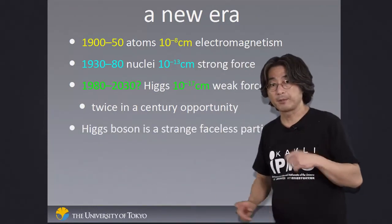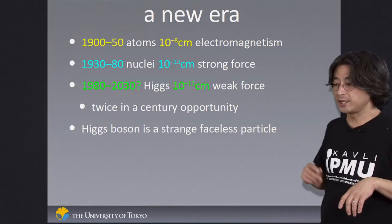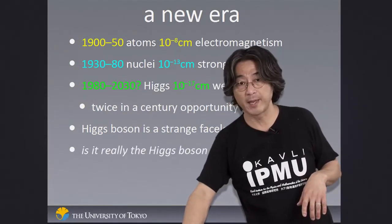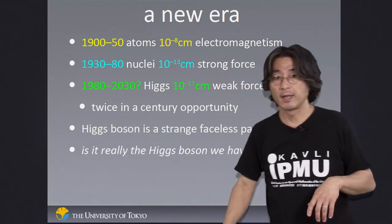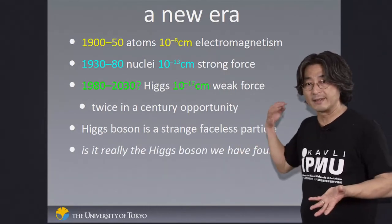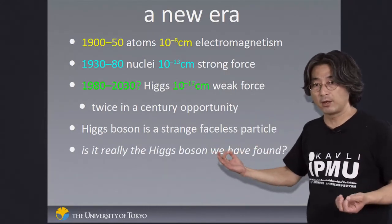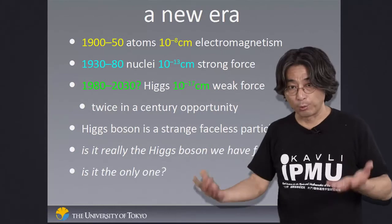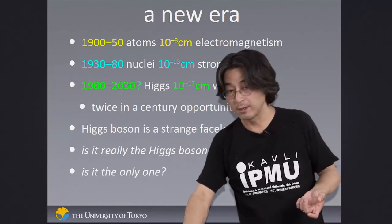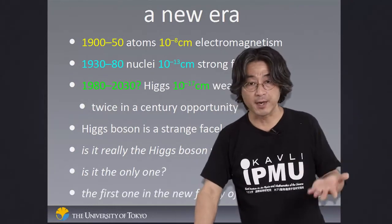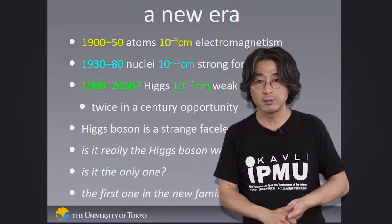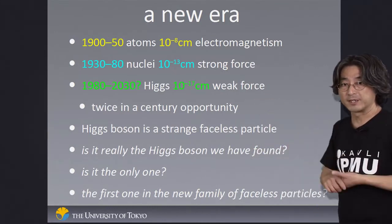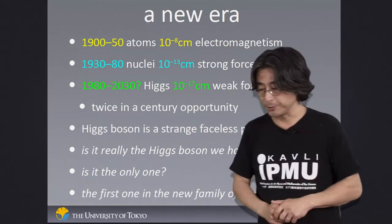At the same time, the Higgs boson is this strange faceless particle, and there are still many questions to be answered. Is what we have discovered really the Higgs boson we've been looking for? Is this the only particle which doesn't have spin? Or maybe there are other kinds of Higgs boson — maybe it's the first in a new family of faceless, spinless particles.